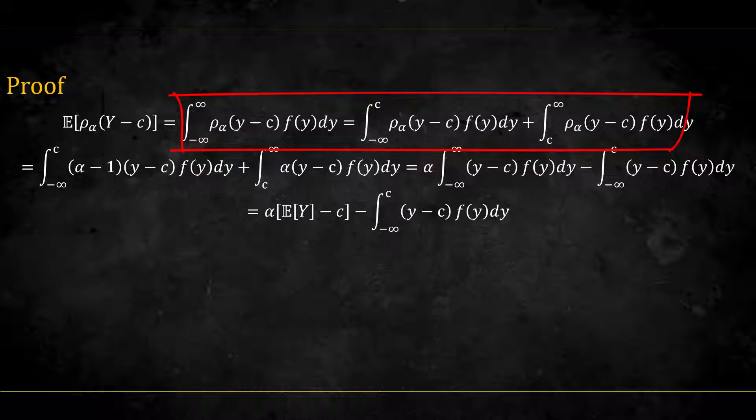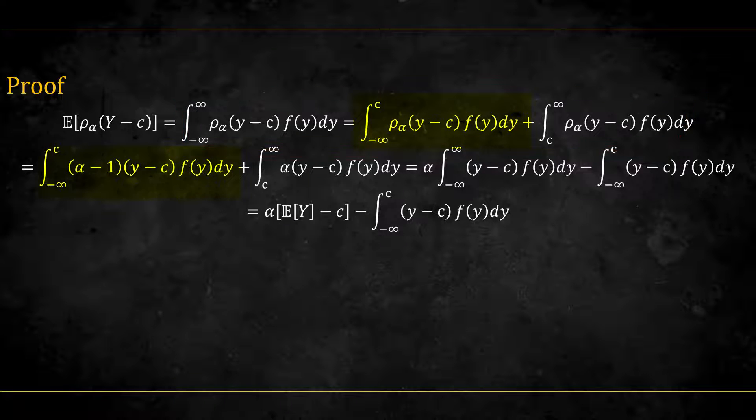For the first case, the loss will be (alpha - 1) times (y - c). In the second case, it will be alpha times (y - c). We can collect for alpha and join the two integrals to one integral.